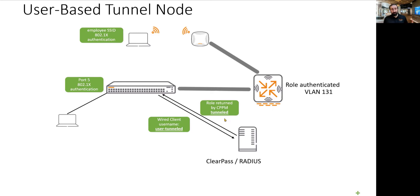Once ClearPass authenticates the client, it will send back an HPE user role called 'tunneled'. On the switch we have configured the logic: if I receive the HPE user role 'tunneled', then the traffic from that client will be tunneled to the controller. The controller will then assign an IP address in VLAN 131. How does the controller know this? We have already configured the switch in that tunneling mechanism to assign VLAN 131 to that specific user.